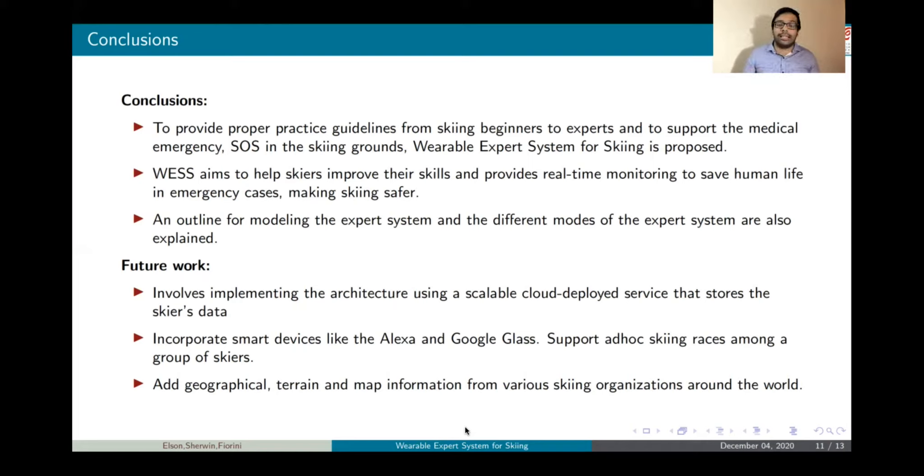Our future work involves implementing the architecture in a scalable cloud-deployed service that stores the skier's data and also to incorporate experts on smart devices like Alexa and Google Glass and support ad-hoc skiing races among a group of skiers and to measure out their performances. We also have plans to add in geographical terrain map information from various skiing grounds so that the user, a skiing user who has this wearable device, will have access to all the map locations of the various skiing grounds around the world.